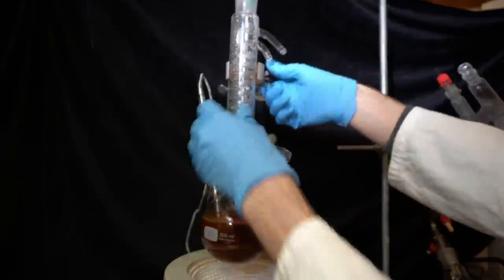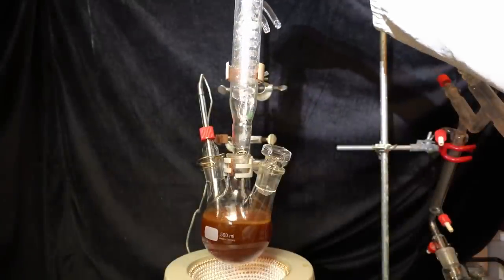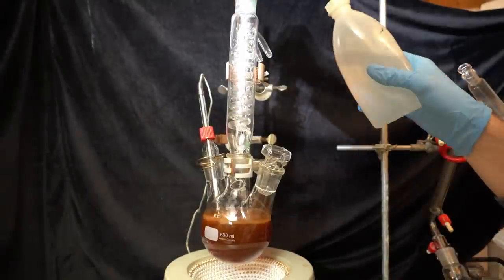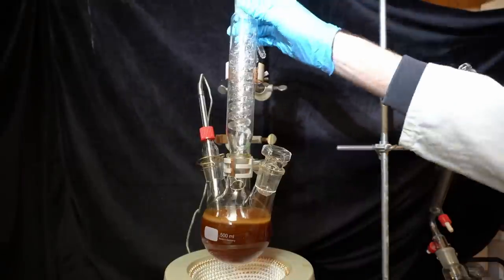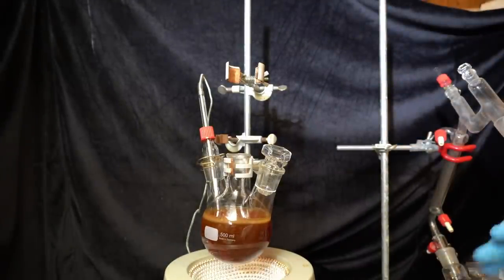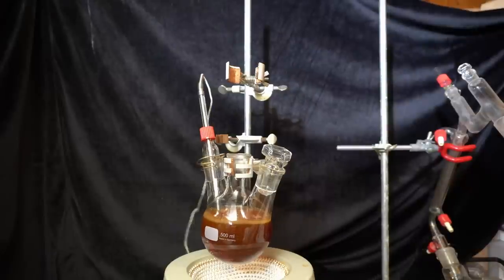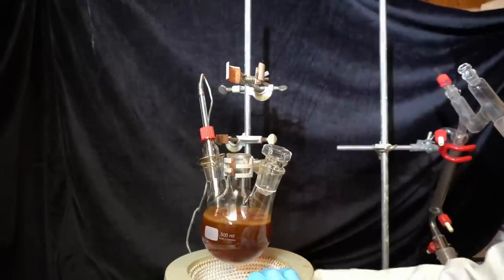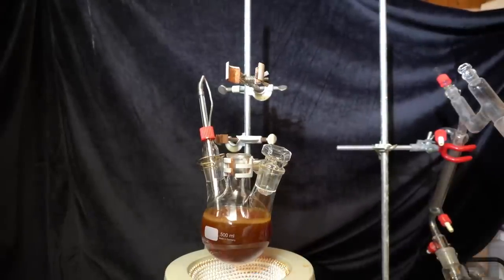To separate the dimethylaniline from the crude mixture, in the original paper they simply diluted the ethanolamine with water and then extracted the product. However, my glassware is simply too small to deal with the amounts of water this would require at my scale. I will therefore steam distill the dimethylaniline.